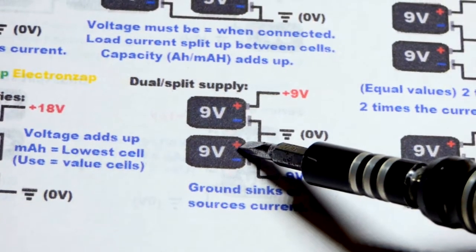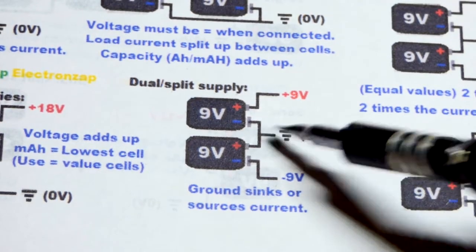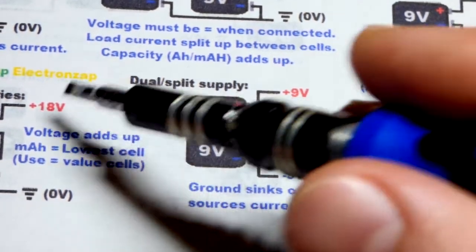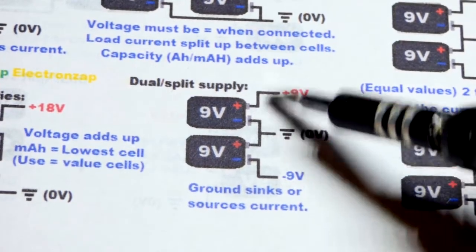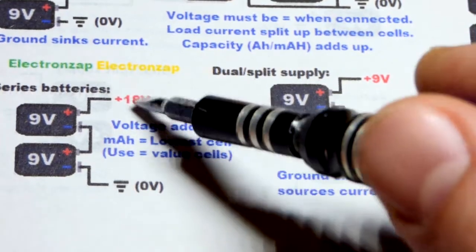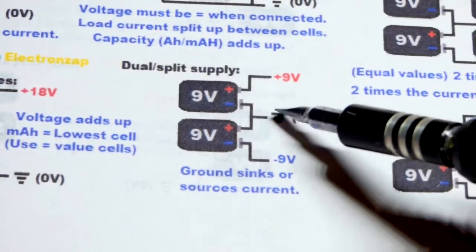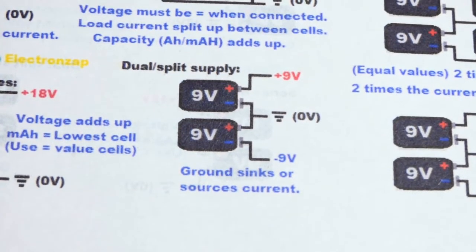Another thing is, let's say these are rechargeable batteries. You want to monitor that when you charge them to 18 volts total, you want to make sure one battery has 9 volts across it. The other battery has 9 volts across it. So even if you're using the 18 volts total, when it comes to charging them, you want to monitor that each one of them is the same voltage.